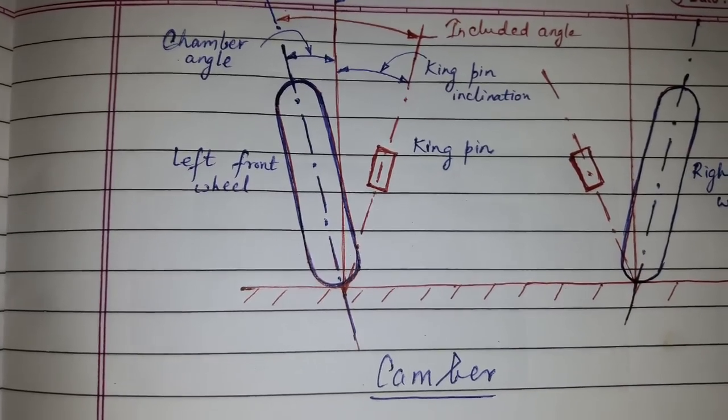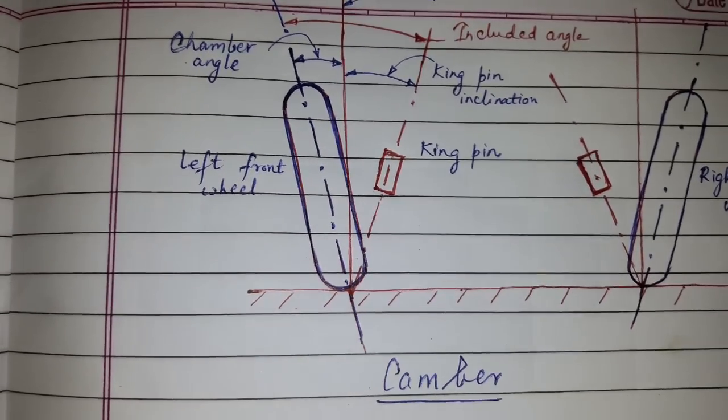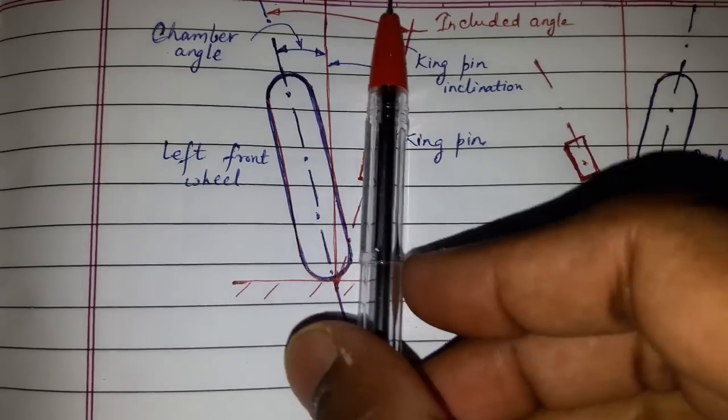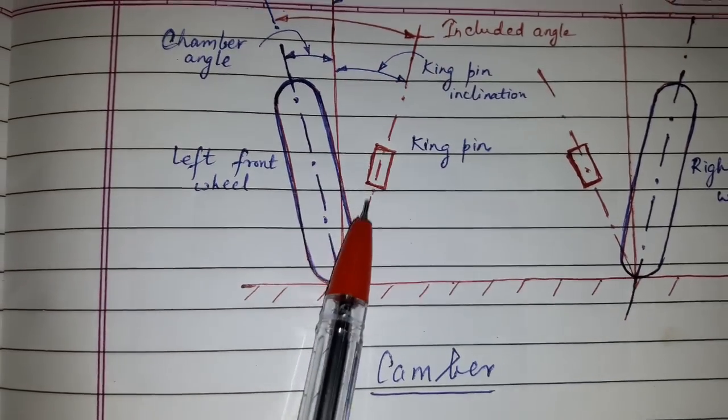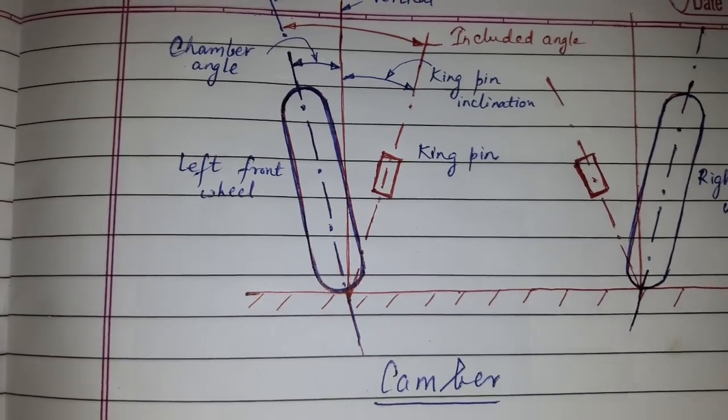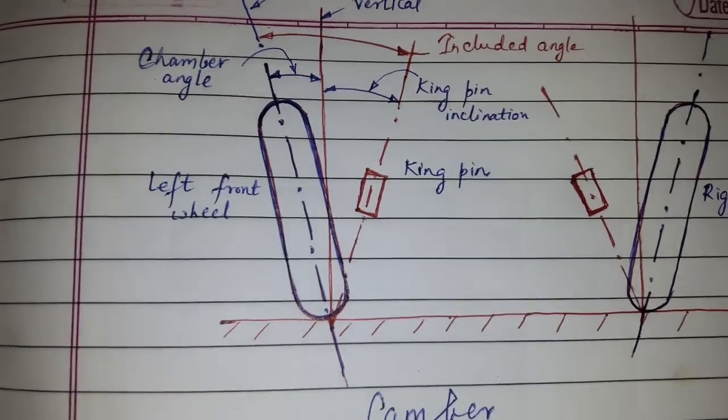Kingpin inclination: Kingpin inclination is the inward tilt of the kingpin from the vertical plane.